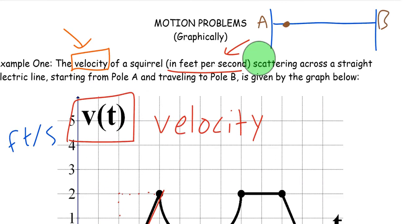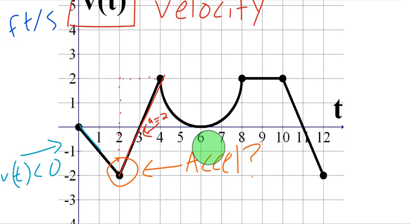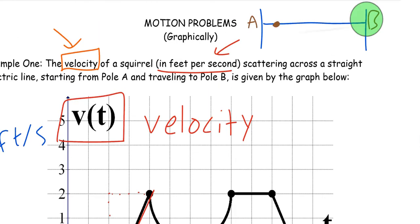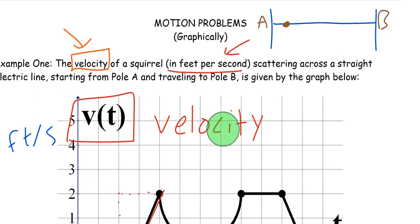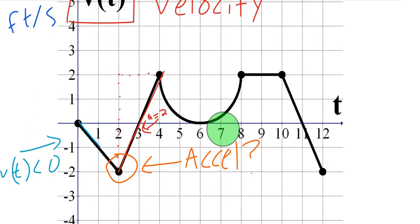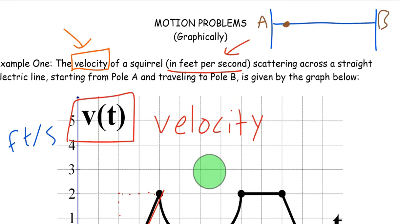So that's the original example and explains the fact that the squirrel is moving from point A to point B, and this is its velocity. It's moving on a straight line or an electric line. This is a velocity at any given point in time. For example, at time T equals 1, its velocity is negative 1, and so on and so forth.